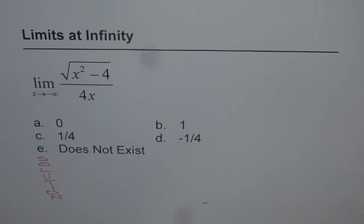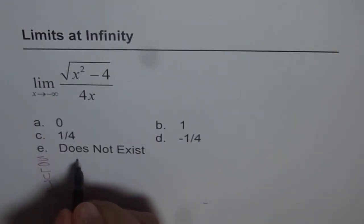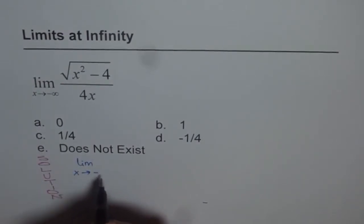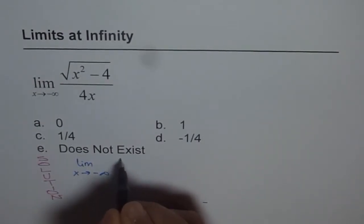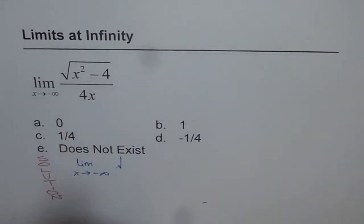To find the solution, I'll factor the terms inside and see how we get the value. The question is limit x approaches minus infinity, and within the square root we have x squared minus 4.